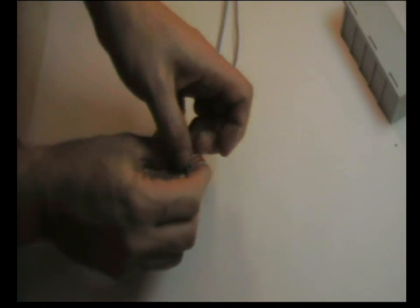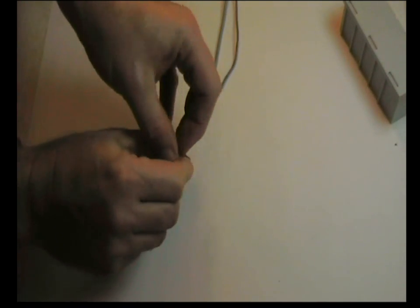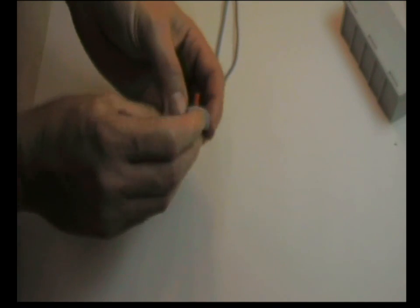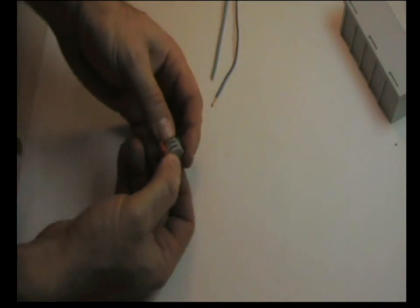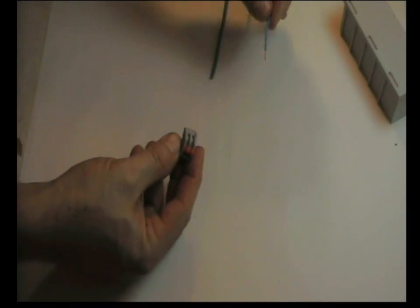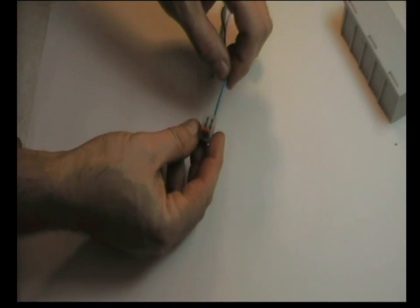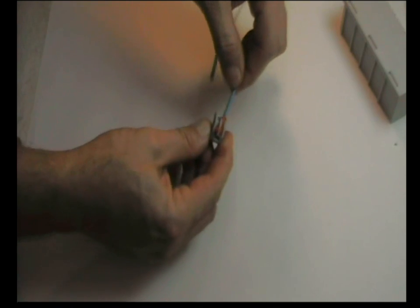For the cage clamp connector, to operate it, we need to lift these levers up. Once the levers are in the up position, the actual mechanism inside is open, and it's ready to accept the cable. Here, I've got a bit of flex. If I put the flex in and release the lever, that's now connected.